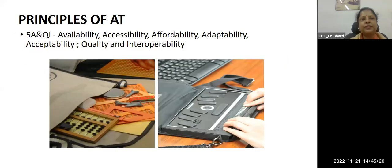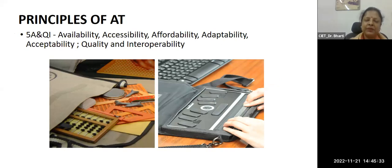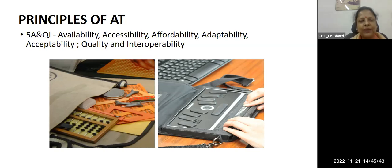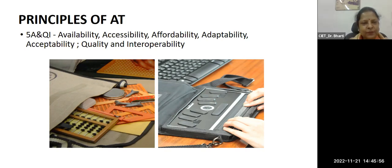What are the principles of assistive technology - what makes a good assistive device? This is the 5A and QI framework. The five A's: it should be easily Available, Accessible, Affordable, Adaptable, and Accepted by the person - for example, giving a high-end smartphone to your father who has no interest in learning its usage means it is not acceptable to him. It should also be of good Quality, and the device should be Interoperable - able to connect with and blend with other devices easily.